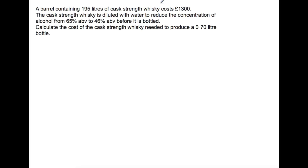So the relationship that we have that we will come to eventually is that 195 liters costs £1300. Now we need to know how much of the cask strength whiskey we require to be able to work out the price. So if we are starting with 65% and we're diluting down to 46%, so we're trying to make a 0.7 liter bottle. So we know that 46% of the bottle is alcohol.